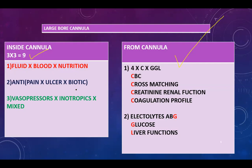Through the cannula you will put: resuscitation fluid — most importantly Hartmann's, which should be avoided in hyperkalemia due to its potassium content; blood; and nutrition. Also the triple therapy: anti-pain, anti-ulcer, and antibiotic — never forget about the triple anti. And vasopressors in septic shock, inotropics in cardiogenic shock.